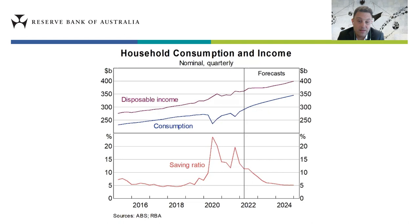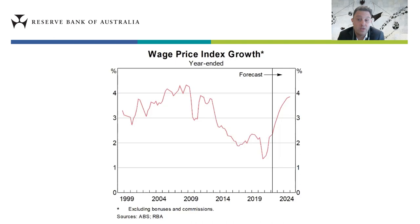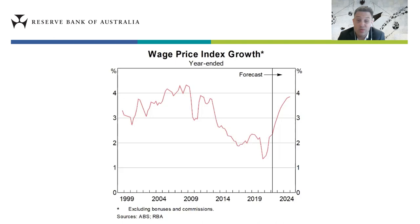Wages growth has picked up as the labour market has continued to tighten. The Wage Price Index grew by around 2.5 percent over the year. More timely information from the bank's business liaison program and business surveys suggests wages growth will pick up further in the year ahead. Wage policy announcements by the Fair Work Commission — the independent Australian body responsible for setting national minimum wages and employment conditions — and a number of state governments are also expected to support a pickup in wages growth. Growth in the WPI is forecast to pick up to three and three-quarters of a percent by end of 2024, which would be the highest level of wages growth since 2012.